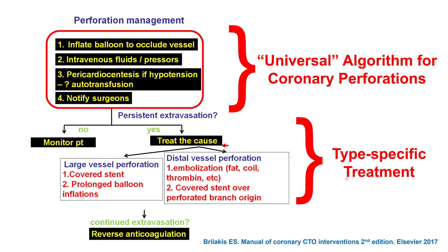Nevertheless, this is a perforation and the question is what is the next management step. It is important to have an algorithm: the first step in any perforation is to inflate a balloon to occlude the vessel, to buy time and see if the perforation will seal. If not, for a large vessel perforation we typically use a covered stent, or if it is a distal vessel perforation — like in this case involving the septal — we treat it with embolization using either fat or a coil.